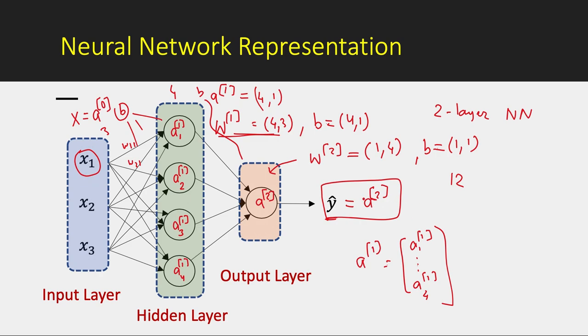So these were some of the more representation notations associated with neural network. In future lessons we will look at more details and we will see how these values are being calculated. How we feed input and how the different layers are ultimately calculating the output values.